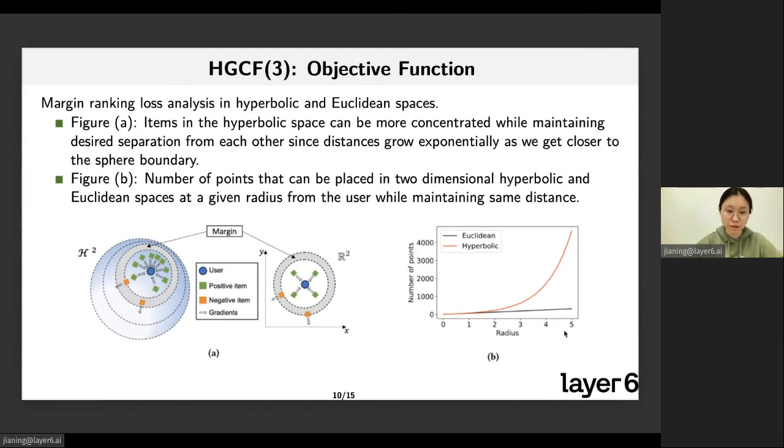As shown in Figure B here, I put this example. When both hyperbolic and Euclidean space are two-dimensional, hyperbolic space can clearly contain more points at the same radius. This very much relates to how much we can regulate the distance between users and items with the margin ranking loss.